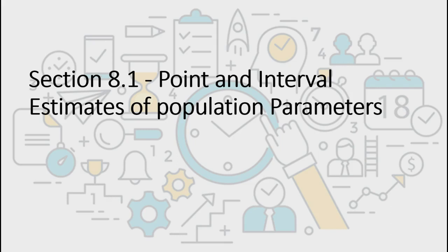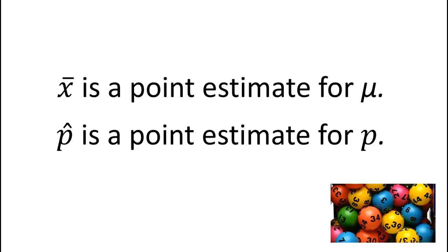Section 8.1: Point and Interval Estimates of Population Parameters. There are two main types of inference we're going to learn this semester: confidence intervals and hypothesis testing. The topic of Chapter 8 is confidence intervals; we will see hypothesis testing in Chapter 9. A point estimate is a single value estimate of the parameter we are interested in learning about — it is our best guess. The statistic from a sample can be used as a point estimate. This gives us that x-bar is a point estimate for mu, and p-hat is a point estimate for p.